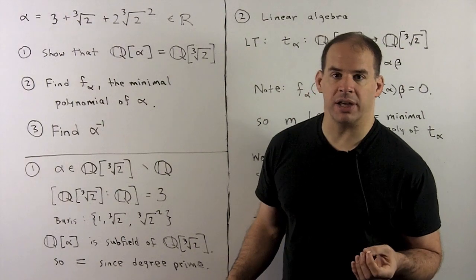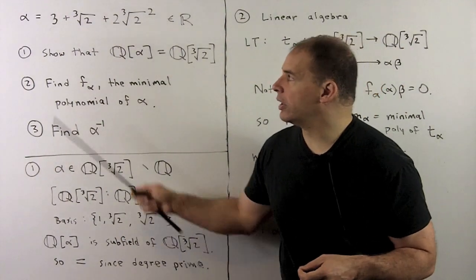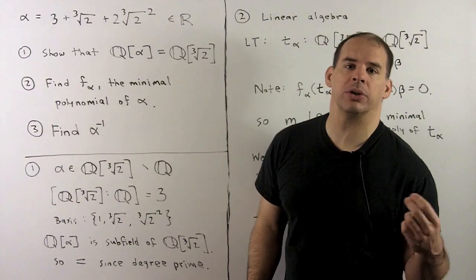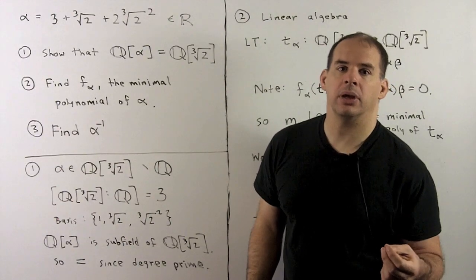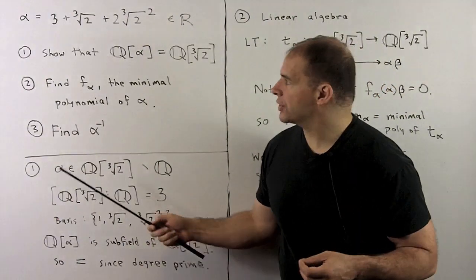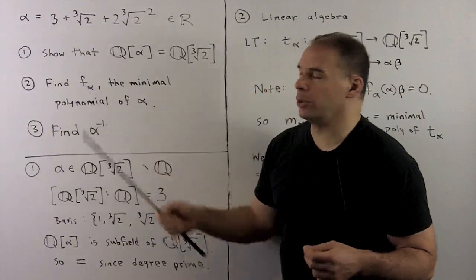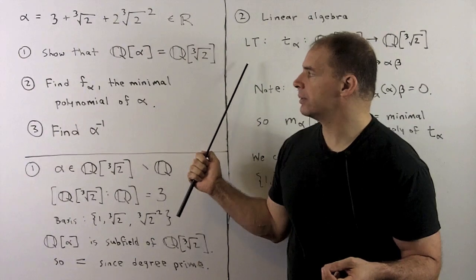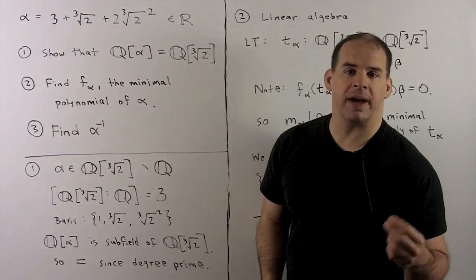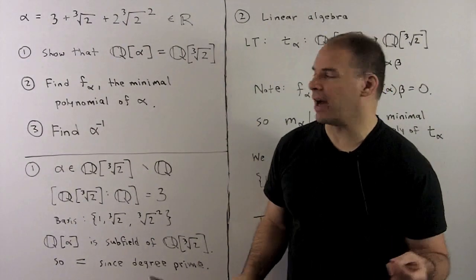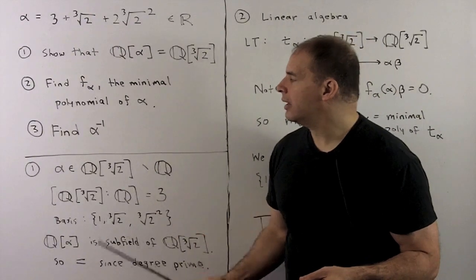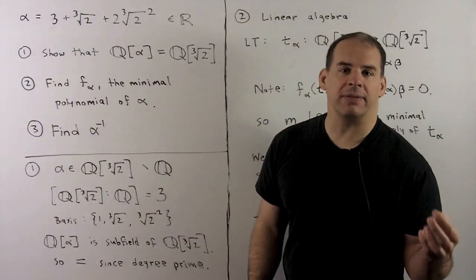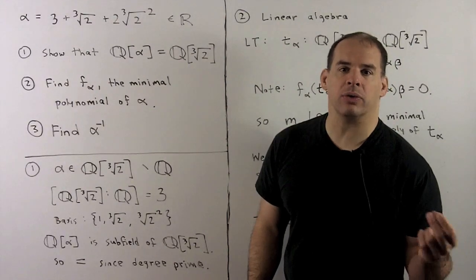Here's an example using simple extensions. Consider the real number alpha given as 3 plus cube root of 2 plus 2 cube root of 2 squared. We have the following questions: first, we want to show that Q adjoin alpha equals Q adjoin cube root of 2, as subfields of the reals. Then we want to find f sub alpha, the minimal polynomial of alpha over the rationals. Finally, we want to find alpha inverse, expressed as a polynomial in alpha over the rationals.